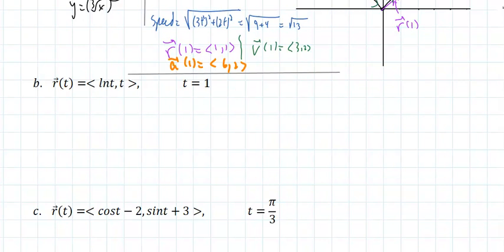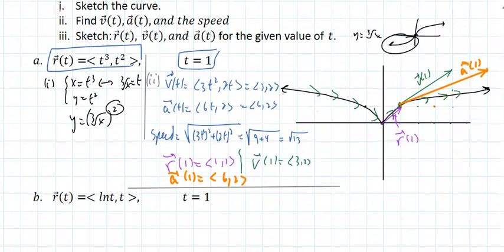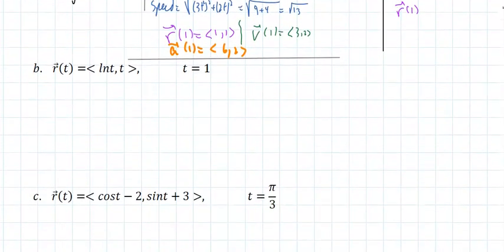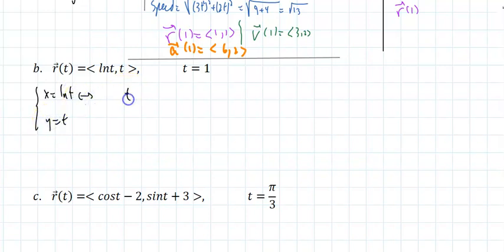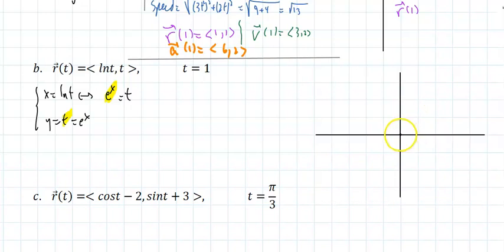Now we get to the second problem — example B. Here's my function. Remember, part A was to sketch the curve; part B is to find the velocity, speed, acceleration, and sketch all three on the graph. Normally when I sketch a graph of a vector equation or parametric equation, x equals natural log of t and y equals t, which means t equals e to the x. I know exactly how exponential graphs look: 0, 1, 1, 2.7 — they're like parabolas but they grow a lot faster.